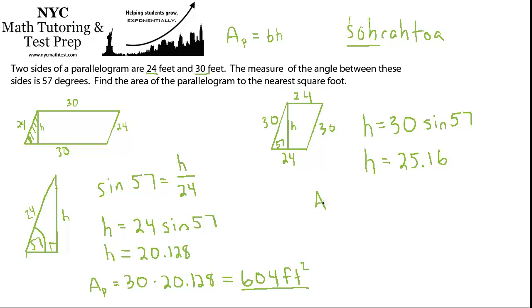And then when you go to find the area of the parallelogram, you'll get base times height. But now what's the base? The base is now only 24 instead of 30. So it's 24 times 25.16. And lo and behold, when you multiply that out, it will still round to 604 feet squared.